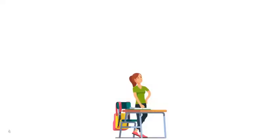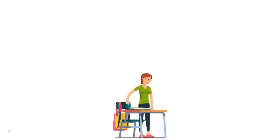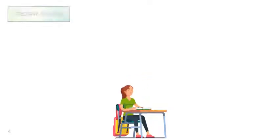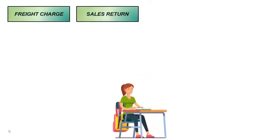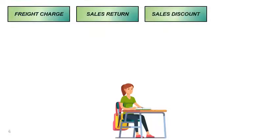To arrive at the net realizable value, the following allowances are recognized: freight charge, sales return, sales discount, and bad debts.